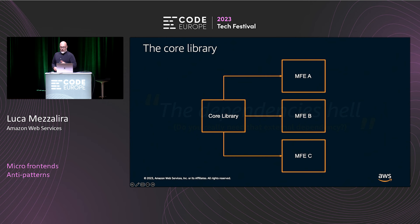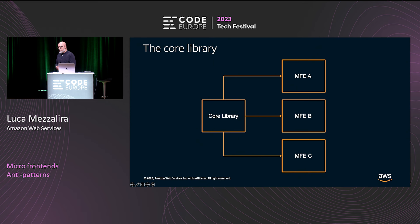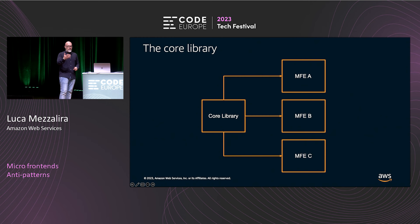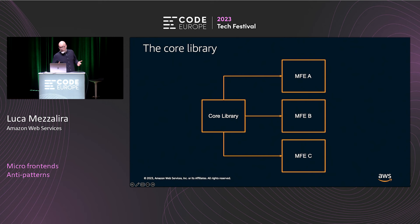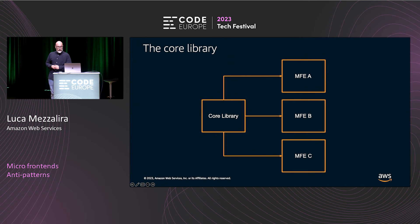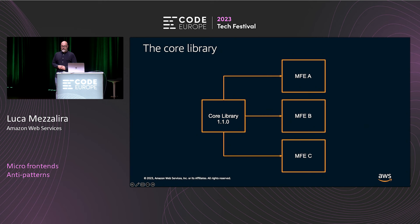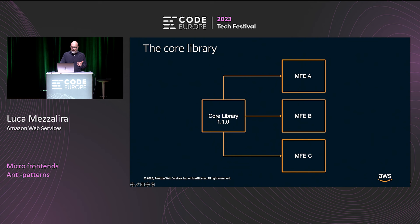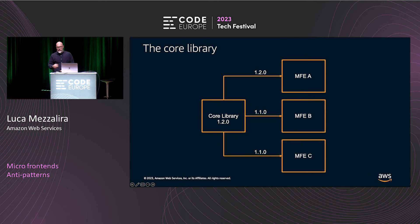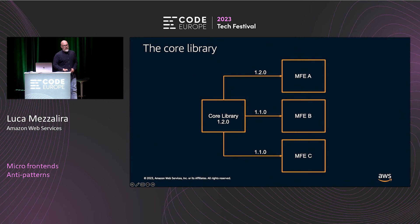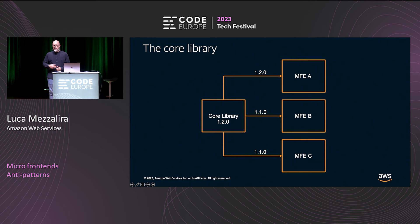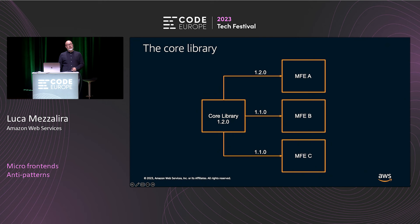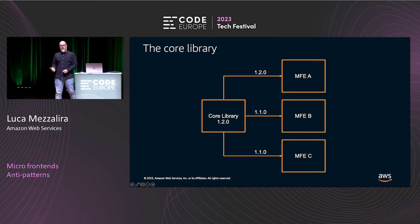Now let's talk about another one I really love: the dependencies hell. When talking about dependency management in micro-frontends, it's no longer just updating a package.json and the whole application has the new library. Now you potentially have a library spread across multiple teams and multiple micro-frontends. Imagine a core library version 1.1 — a brand new version everyone needs. The first thing you notice is that unless you have strong governance, it doesn't mean all teams will have the same version. When you release 1.2.0, maybe micro-frontend A has the latest version, but the other two don't.